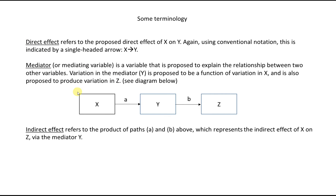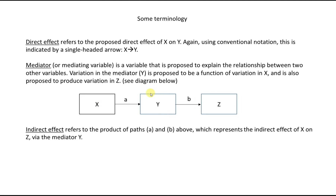In the context of path analyses, you'll encounter terms such as direct effect, indirect effect, and mediator. A direct effect refers to the proposed direct effect of X on Y, indicated by a single-headed arrow from X to Y. A mediator or mediating variable is a variable proposed to explain the relationship between two other variables, where the causal flow runs from X to Y to Z — variation in Y is a function of X, and variation in Z is a function of Y, so Y is a go-between for X and Z. An indirect effect refers to the effect of X on Z by way of Y, and is basically the product of paths A and B.